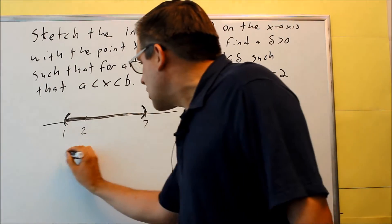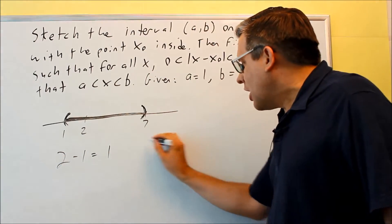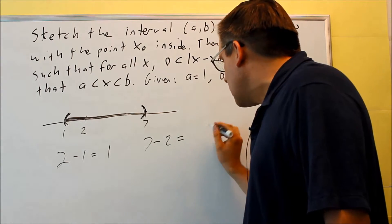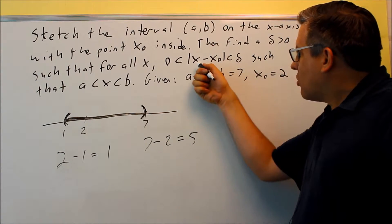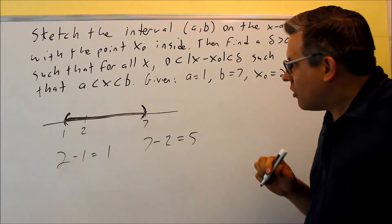Okay, so if I do this, I have 2 minus 1 equals 1, and I do 7 minus 2 equals 5. So I basically just did this. I took x minus x₀. That's exactly what I did here.